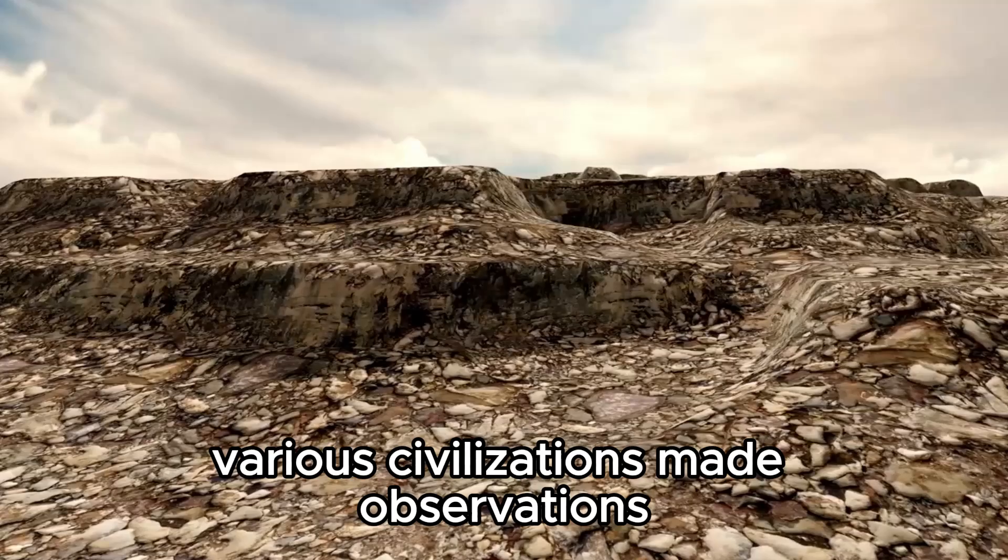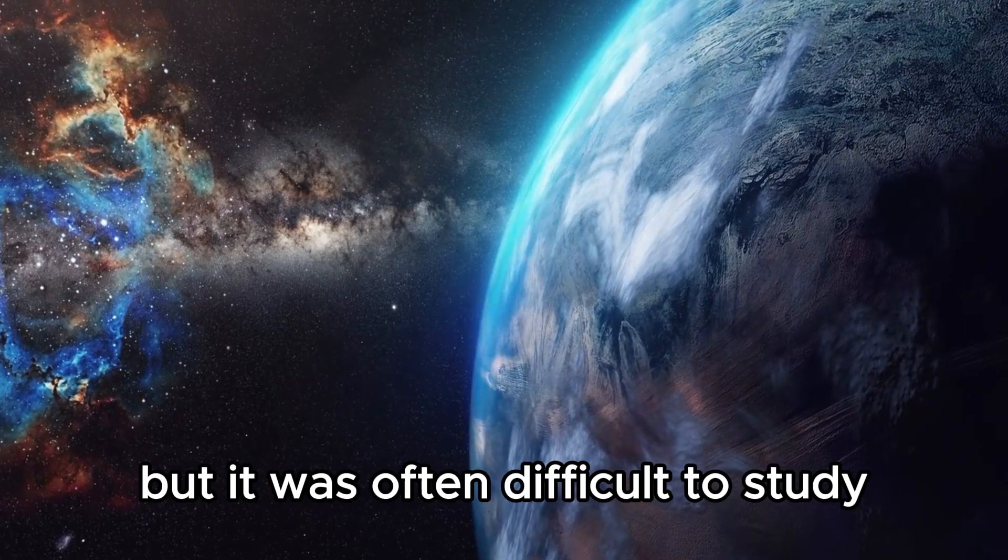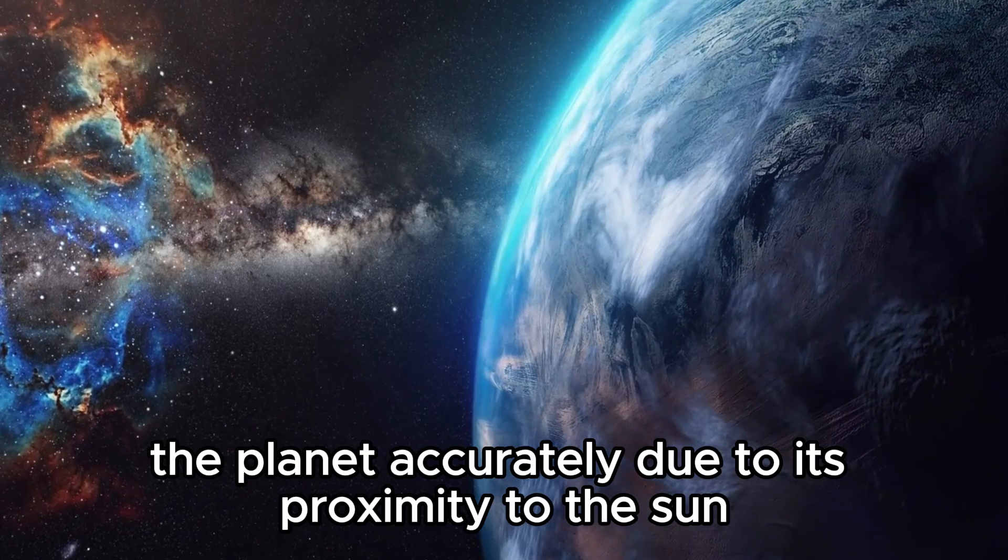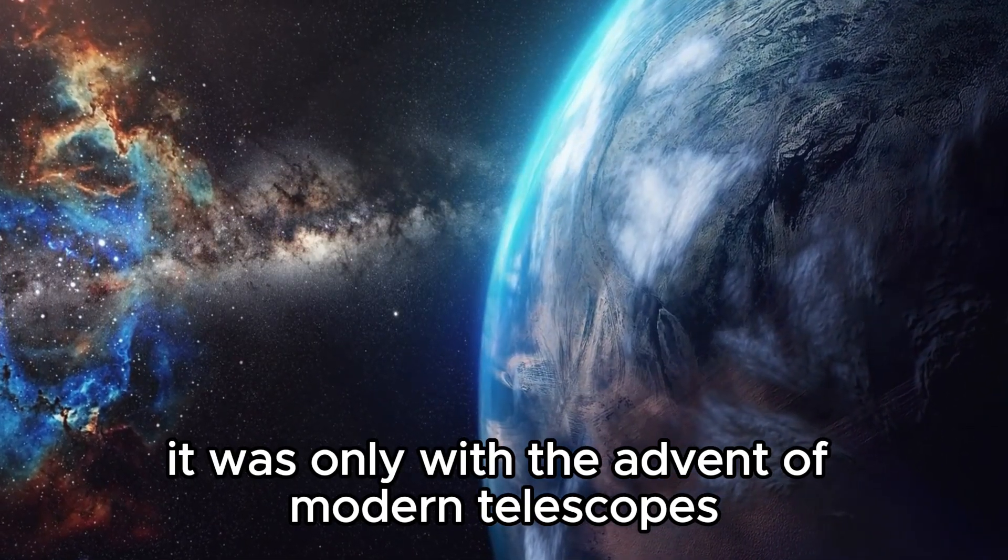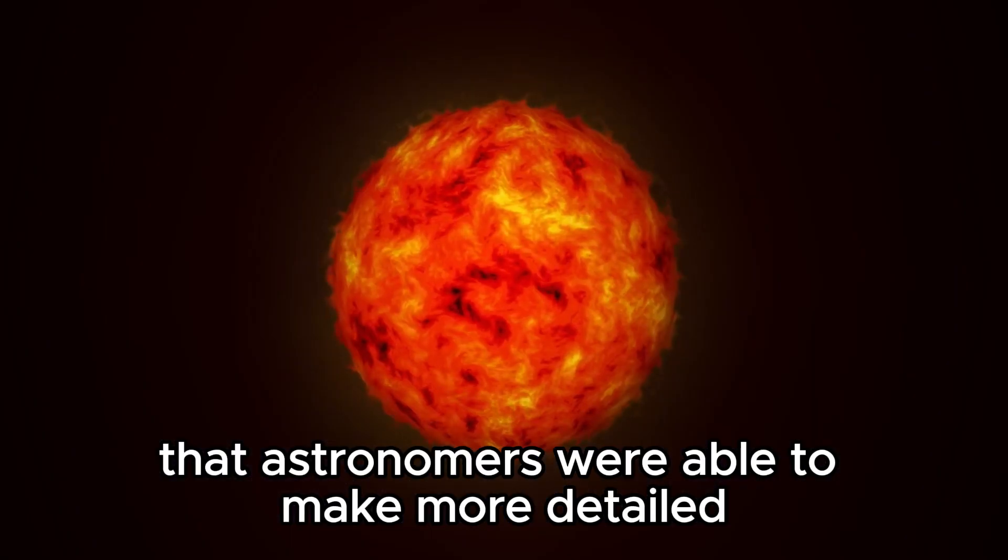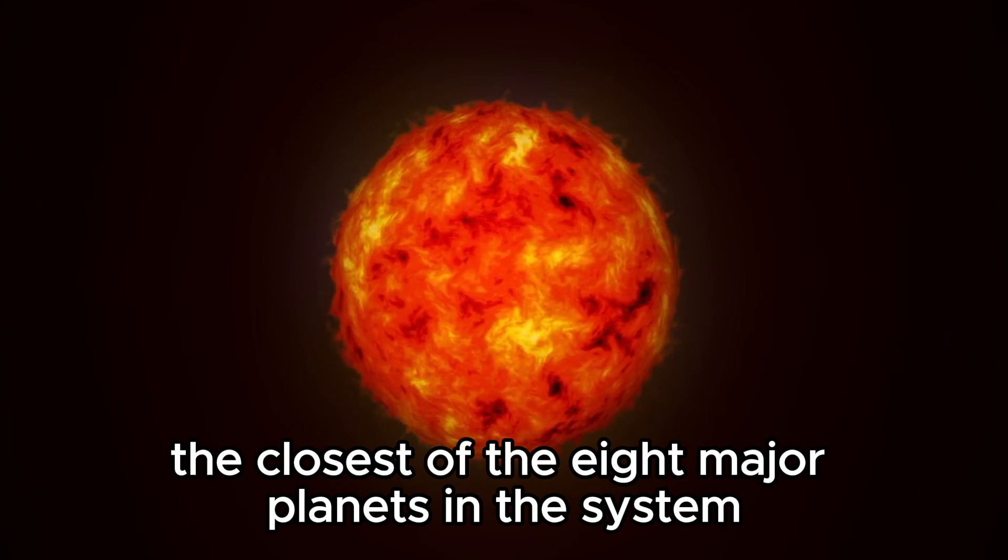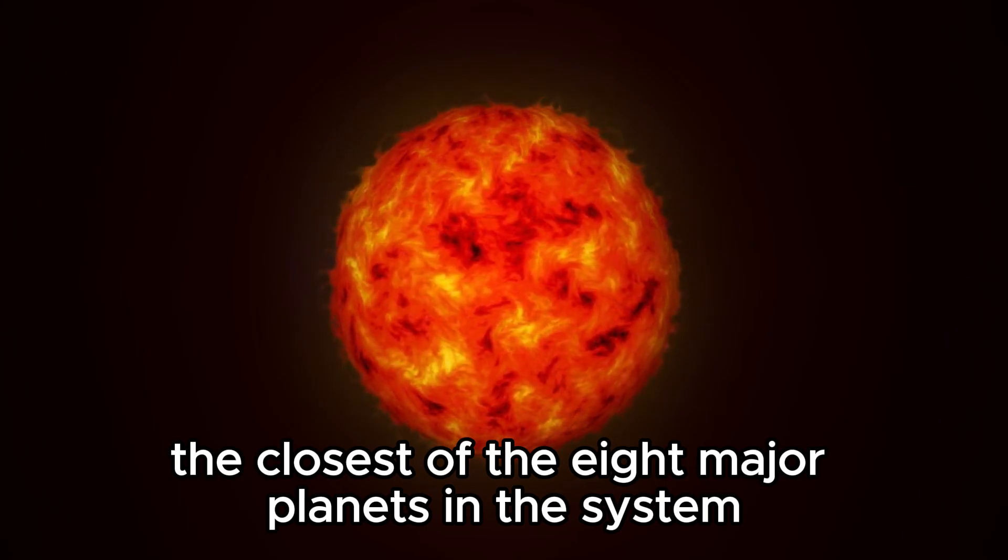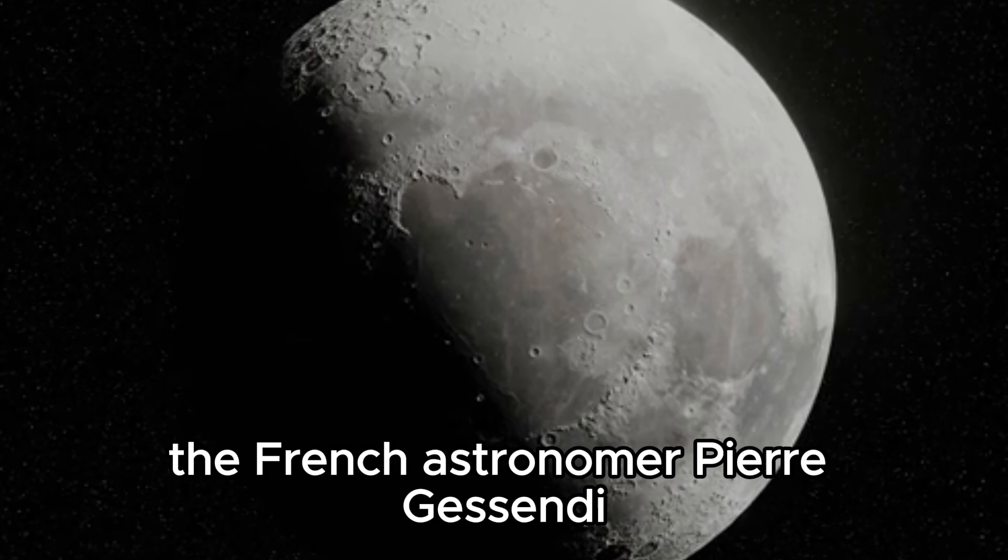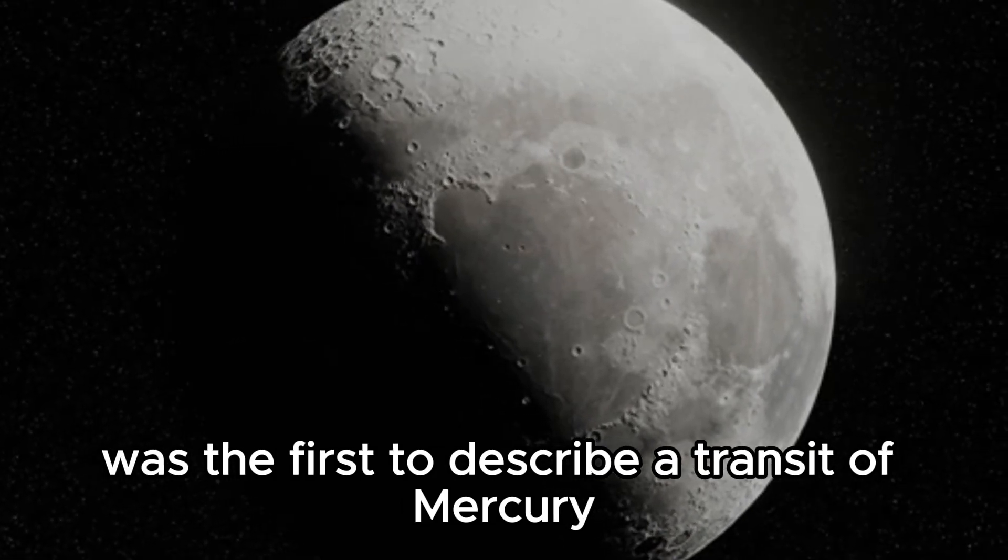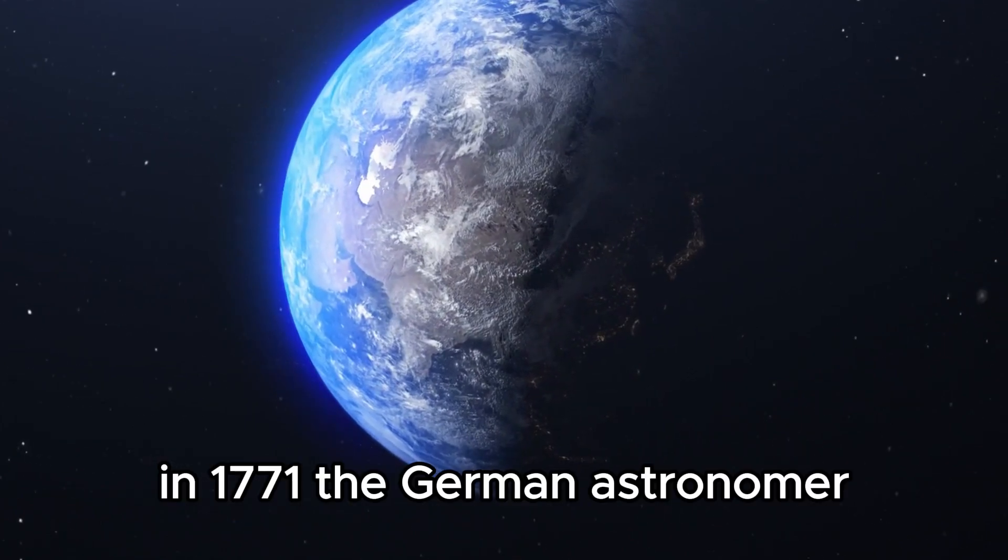However, it was not known how Timocharis discovered Mercury. Over the centuries, various civilizations made observations and records of Mercury, but it was often difficult to study the planet accurately due to its proximity to the Sun. It was only with the advent of modern telescopes in the 17th century that astronomers were able to make more detailed studies. In 1631, the French astronomer Pierre Gassendi was the first to describe a transit of Mercury and calculated the planet's orbit.